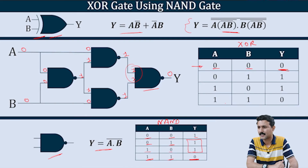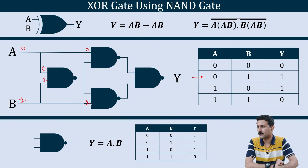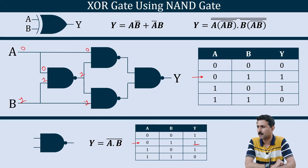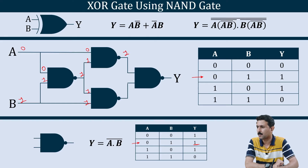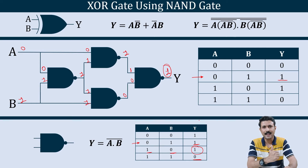Second condition: A = 0, B = 1. When A is 0 and B is 1, the output of the first NAND gate is 1. The intermediate gates receive inputs giving outputs 1 and 0 respectively — when one input is 1 and another is 0, the NAND output is 1. So the final output is 1, which satisfies the second condition.